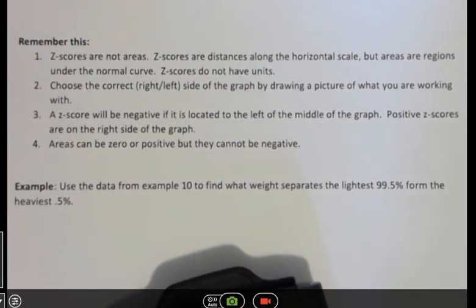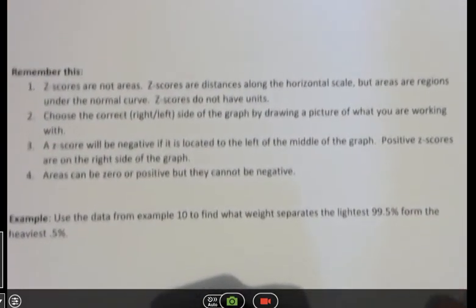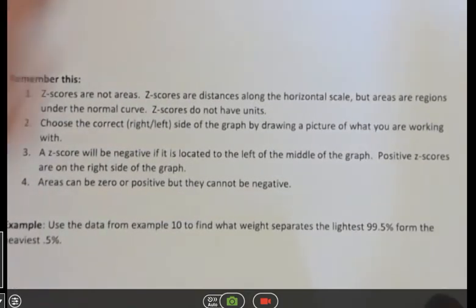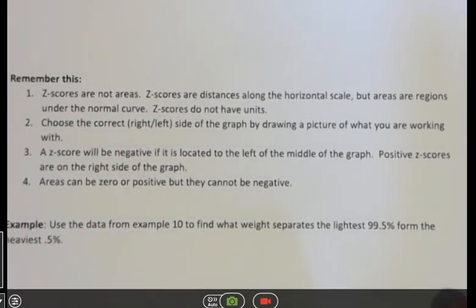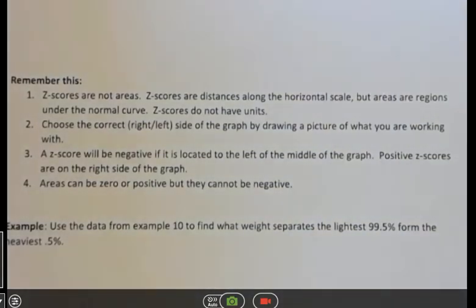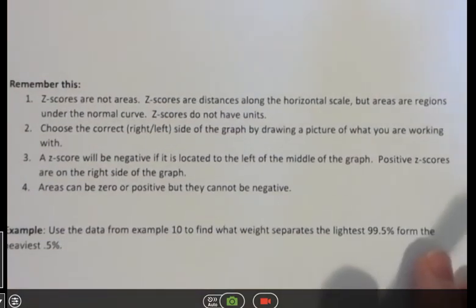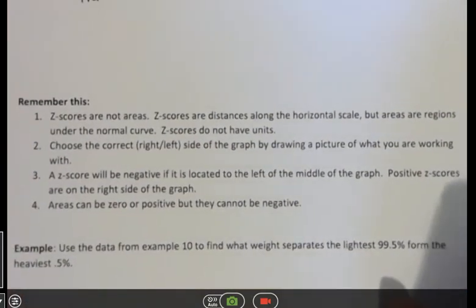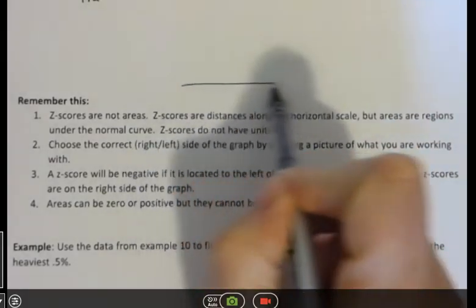Here's a few things I want you to remember. Z scores are not areas. Z scores are distances along the horizontal axis scales. But areas are regions under the curve. Z scores do not have units. That's because when you do a conversion, you put the unit on the top and the unit on the bottom, they cancel each other out.